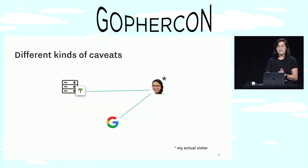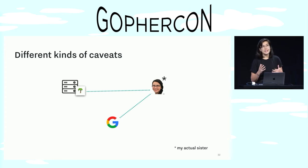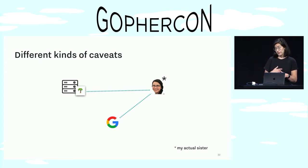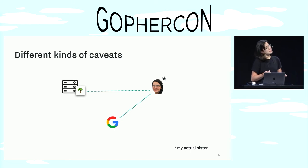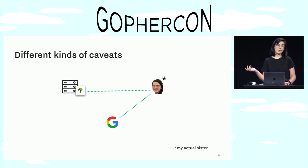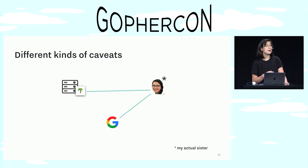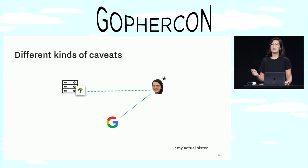You might have noticed the phrase 'first-party caveat' sprinkled around the code, and that's because the caveats I've described so far have all been added by the target service, which means that they're first-party caveats. But one of the coolest things about macaroons is that anyone can add caveats to a macaroon they hold, not just the target services. And any caveat added by someone else is called a third-party caveat, and they're useful any time you want a third-party service to also sign off on some action.